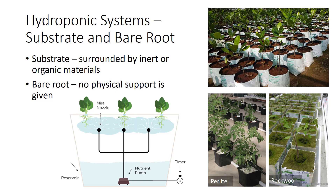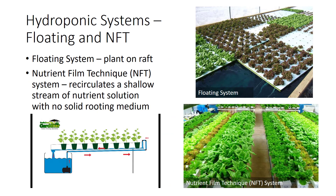The second type of hydroponic system is the bare root system, in which no physical support is given to the root system, which is suspended in the nutrient solution. Several types of bare root systems are used. One is the aeroponic system, in which bare roots are enclosed in a chamber suspended in the air and a fine mist of oxygen-rich nutrient solution is sprayed on the roots at various time intervals. Another type is the continually aerated system, similar to the aeroponic system, except that the roots are bathed in the aerated nutrient solution instead of being intermittently sprayed. There are also floating systems, in which the plant is put on a raft that floats on the nutrient solution with the roots completely immersed below. Finally, the nutrient film technique system involves recirculating a shallow stream of nutrient solution with no solid rooting medium.